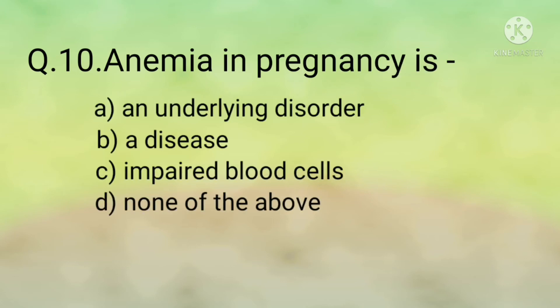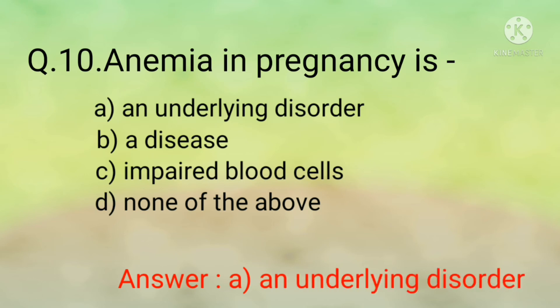Question number ten: Anemia in pregnancy is: option A, an underlying disorder; option B, a disease; option C, impaired blood cells; option D, none of the above. The correct option is option A, an underlying disorder. Anemia is a correctable disorder, but not a disease.